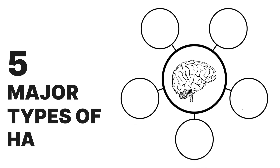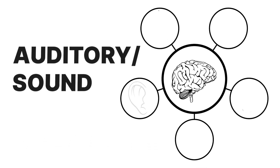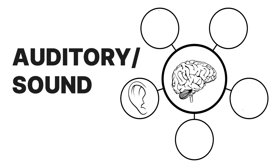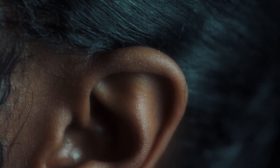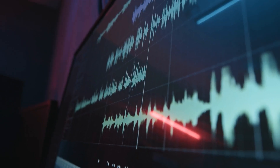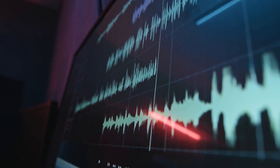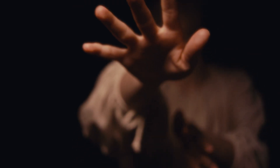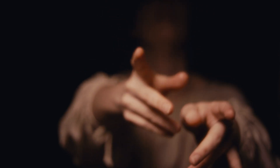There are five major types of hallucinations. Auditory or sound hallucinations are the most common types. They involve hearing sounds that aren't real, like music, footsteps, or doors banging. Some even hear voices when no one has actually spoken. The voices may be positive, neutral, or negative, commanding them to do something that may cause harm to themselves or others.